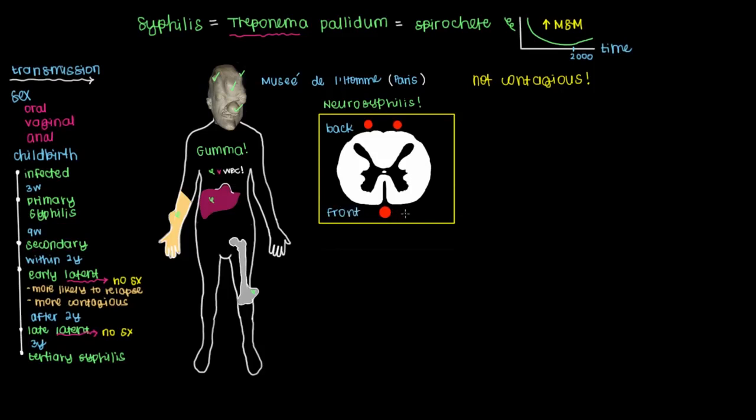Now remember that syphilis specifically likes to invade the walls of the blood vessels and sets up shop in the endothelial cells that line them. And so you'll see some characteristic symptoms that occur because syphilis will invade the blood vessel wall that's supposed to supply oxygen and nutrients to the spinal cord.